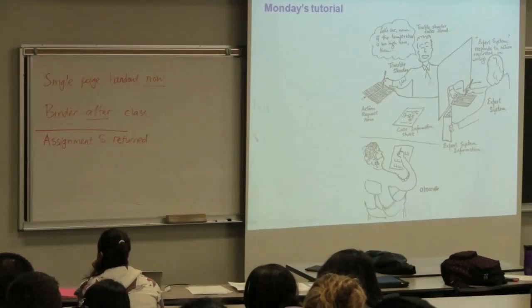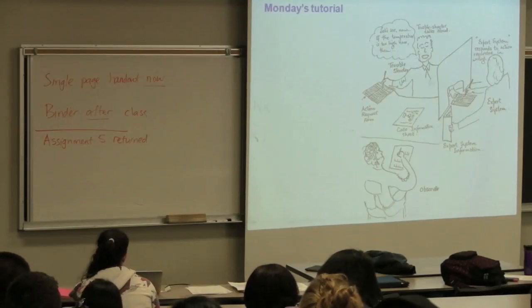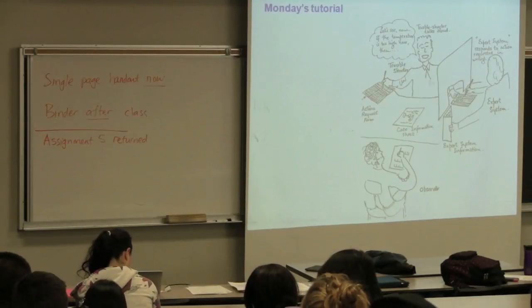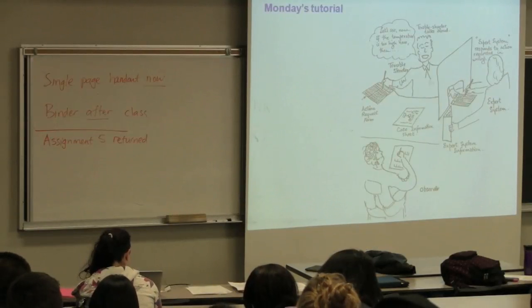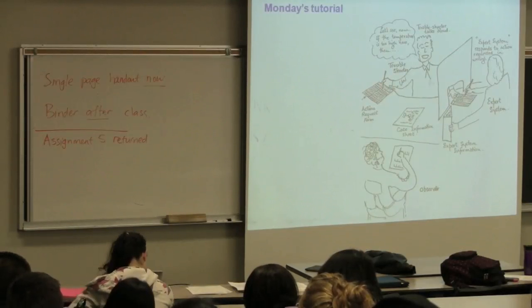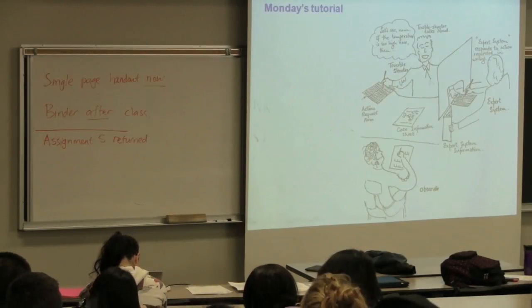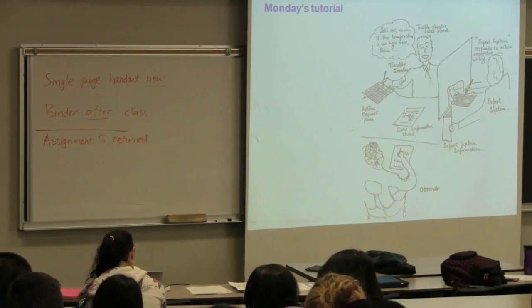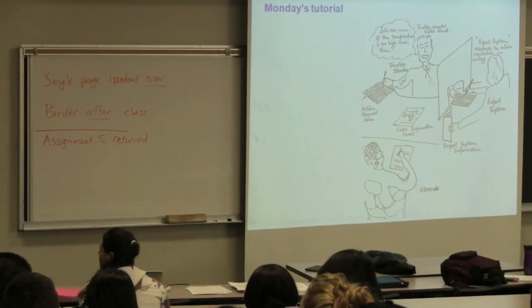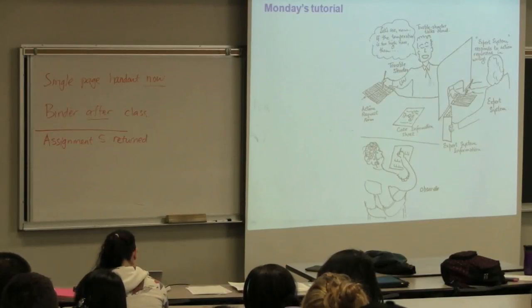And then the observer takes the role of checking the six steps that we're going to learn about today. That's why the troubleshooter is verbalizing this out loud—because then the observer is going to say the troubleshooter is currently in phase one, or phase two, or phase three, and is monitoring the progress of how the troubleshooter is solving the problem, which is actually what you're going to be graded on. The observer is essentially tracking that process.